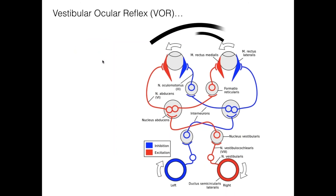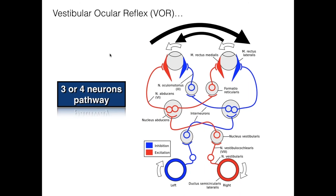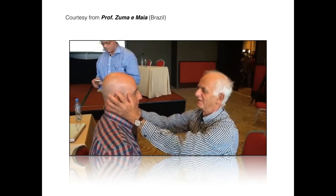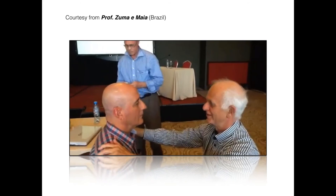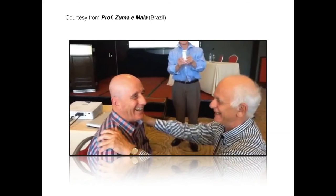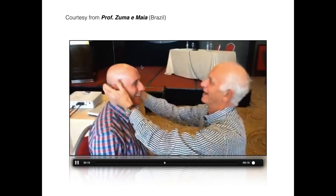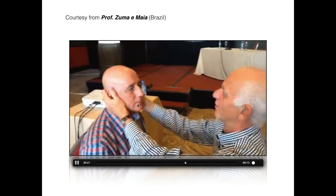When we start talking about the head impulse test — it was first described by two professors in Sydney, Australia: Dr. Halmagyi, who is a neurologist, and Dr. Curthoys, who is a scientist and PhD. They described it in 1986 as a bedside test. The basis of the head impulse test is the vestibulo-ocular reflex. The VOR is the ability to keep our eyes on a target while we move our heads. It's a very fast pathway involving about three or four neurons — a very fast reflex that happens in about eight milliseconds.